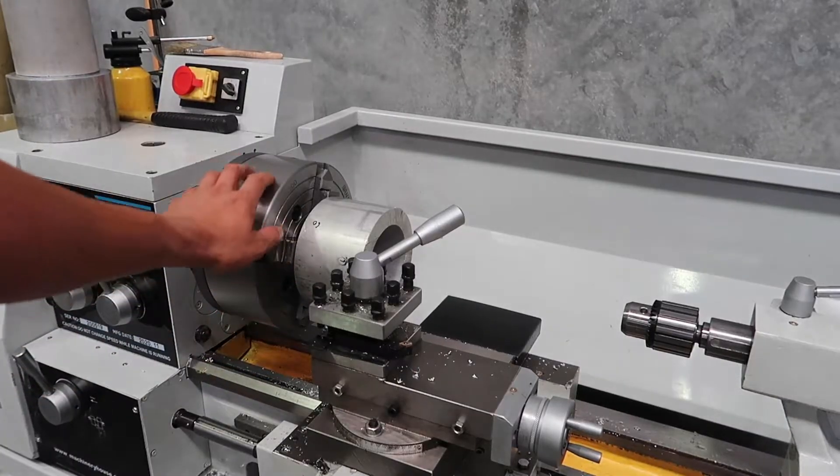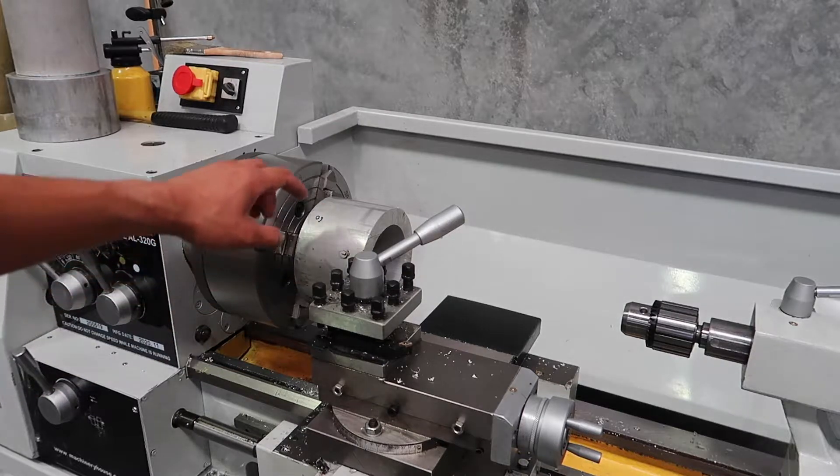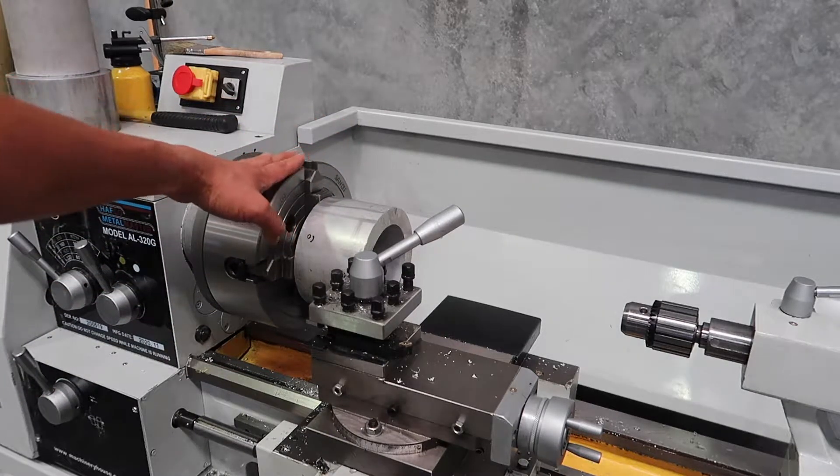So I've set this up in here. This is the bottom bearing. And all I did was use a dial gauge to set it all up. Let's do this.